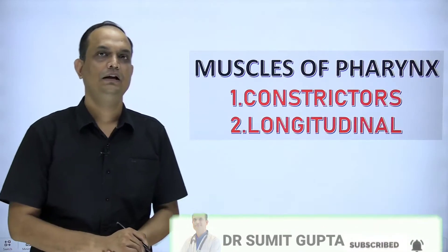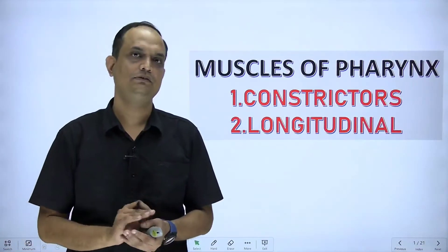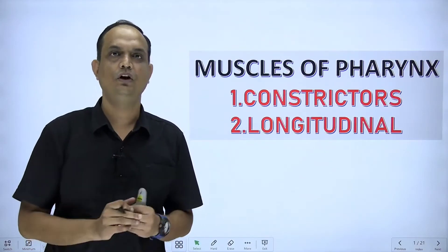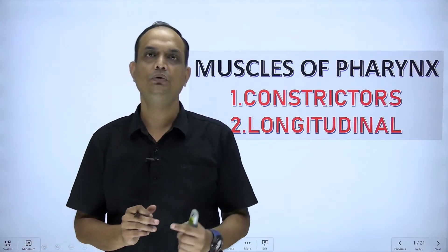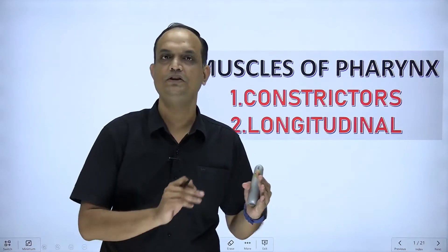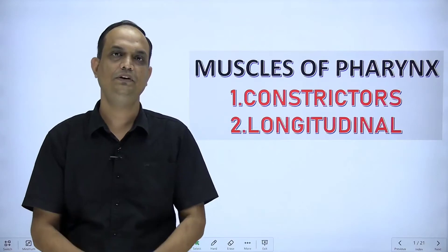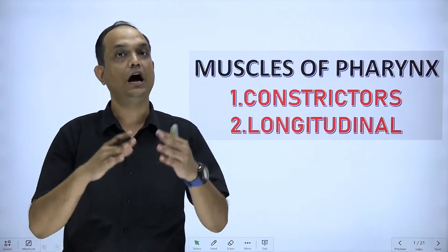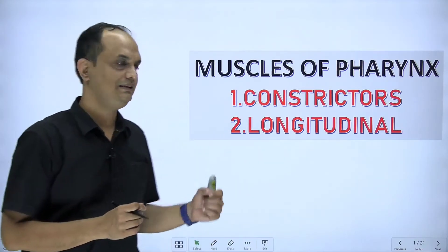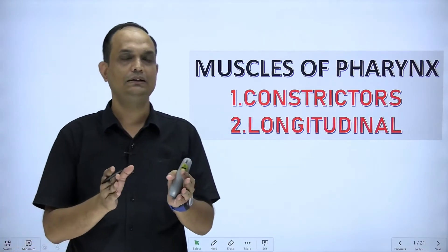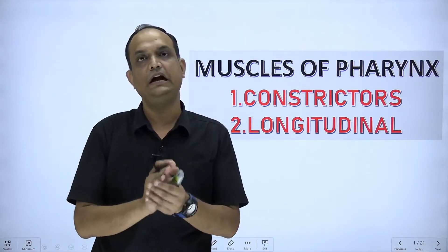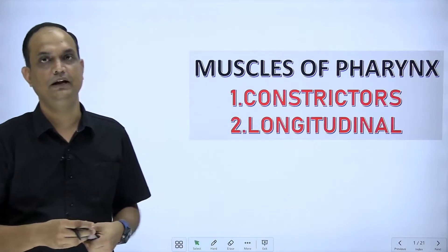Hello students. In part 1 of pharynx we discussed the structural organization of the wall of the pharynx, including the mucosa, the submucosa where the modification known as pharyngobasilar fascia is present, and the outermost fourth layer, the buccopharyngeal fascia. In today's lecture we will discuss the third layer — the muscular layer of the pharynx — which lies between the buccopharyngeal fascia and pharyngobasilar fascia.